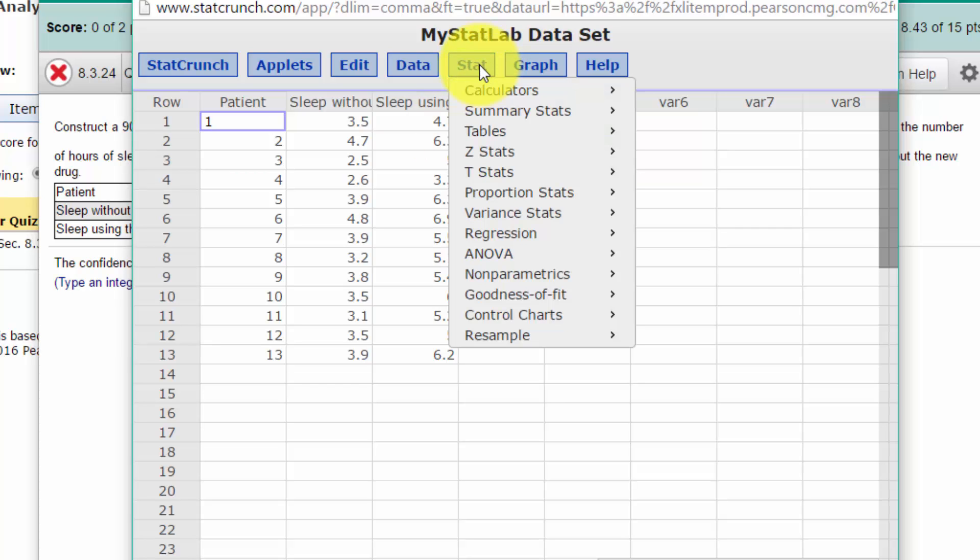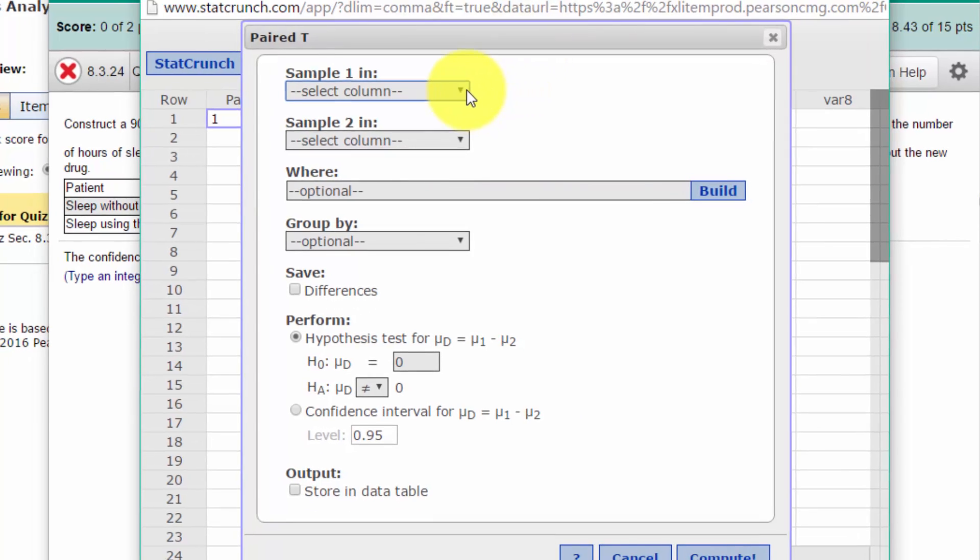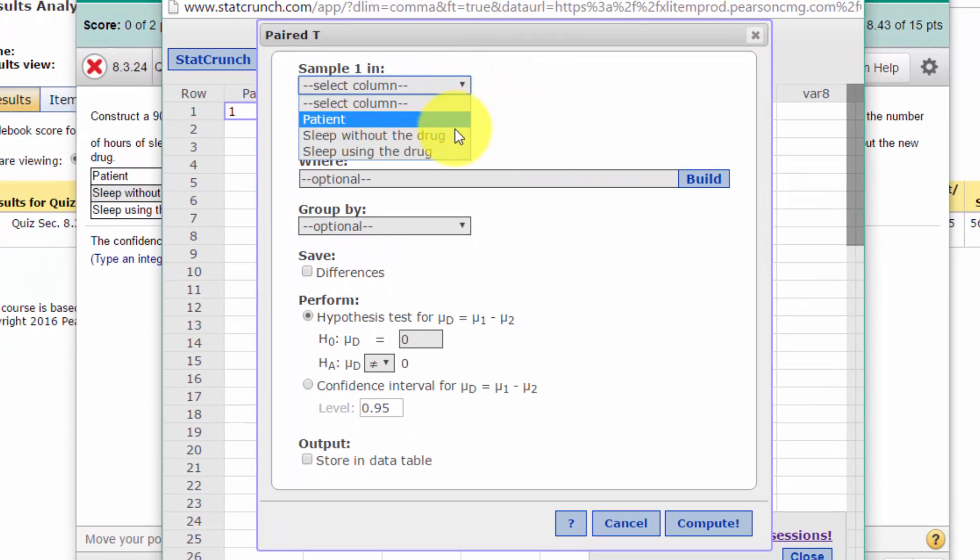We go to Stat, then T Stats, then Paired, because it's a paired sample. We open up this dialog box and select Sample 1, which would be the sleep without the drug, and Sample 2, sleep using the drug. We don't need to change the where and group by options.